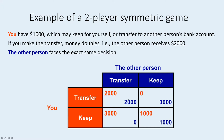If you transfer the money and the other person also transfers, you both end up with two thousand dollars. If you transfer and the other person keeps their money, you end up with nothing and they end up with three thousand dollars — the one thousand they initially had plus the two thousand received from you. The opposite is shown in the bottom-left cell. If both decide to keep the money, you each end up with just the initial one thousand dollars. If you know game theory, you may have realized this is a version of the prisoner's dilemma.